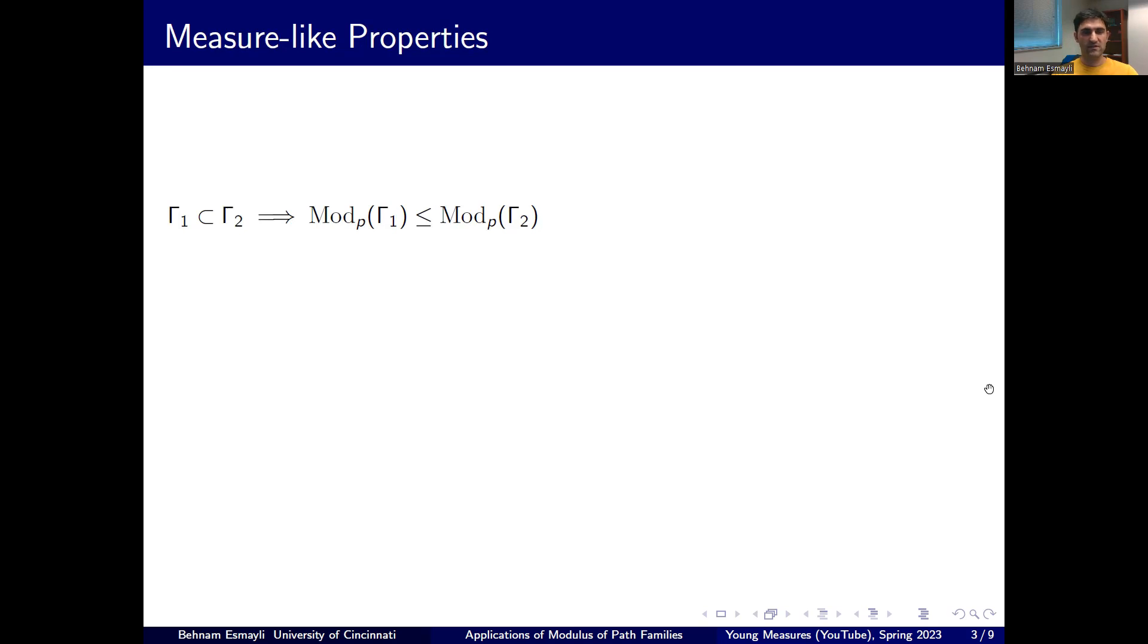First of all, if you have a larger collection of curves, the modulus increases. All of these are, by the way, easy to prove, some of them even trivially. And if you have a countable collection of paths, and if you put them all together, the modulus is less than the summation of the moduli of individual families.